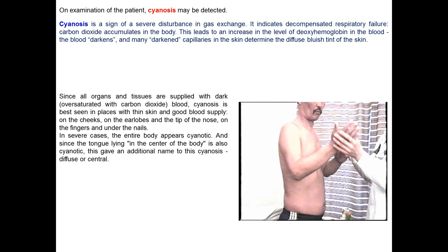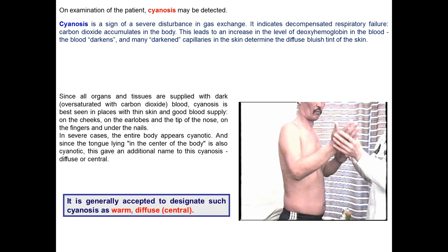On examination, cyanosis may be detected — a sign of severe disturbance of gas exchange indicating decompensated respiratory failure. Carbon dioxide accumulates in the body; this leads to an increase in CO2 level in blood, blood darkens, and the many darkened capillaries in the skin determine the diffuse bluish tint of the skin. Since all organs and tissues are supplied with carbon-dioxide-oversaturated blood, cyanosis is best seen in places with thin skin and good blood supply: on the cheeks, earlobes, tip of the nose, fingers, and nails. In severe cases the entire body appears cyanotic, and since the tongue is also cyanotic, this is called diffuse central, or warm central, cyanosis.